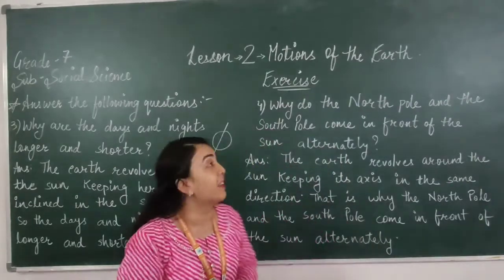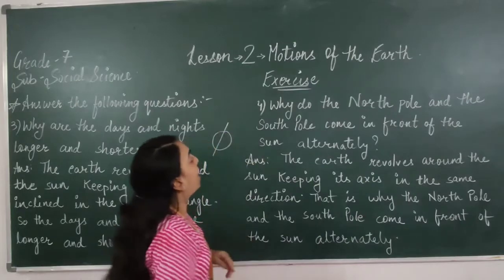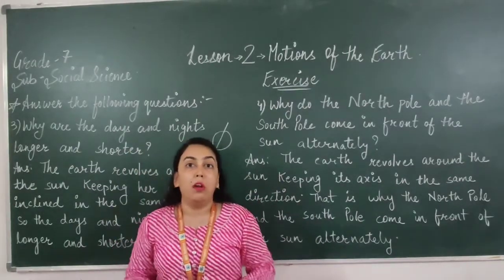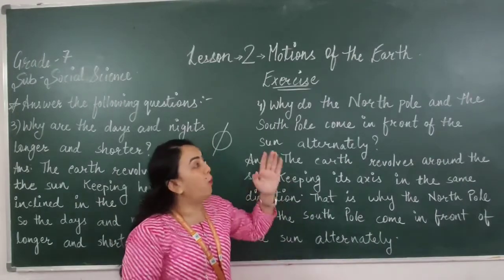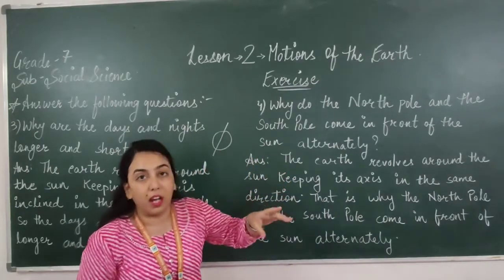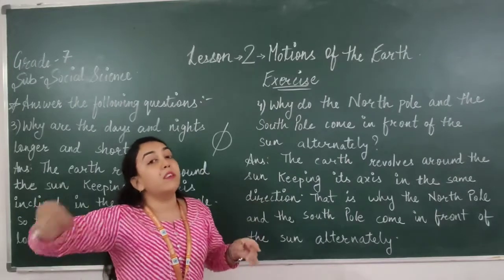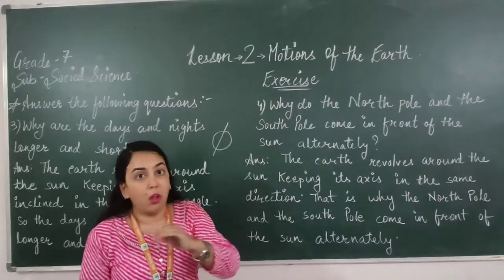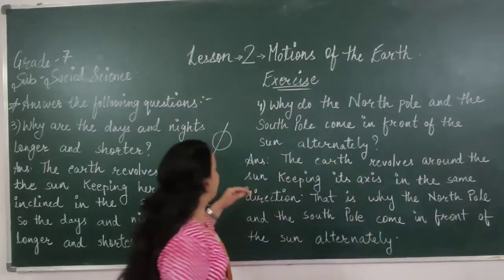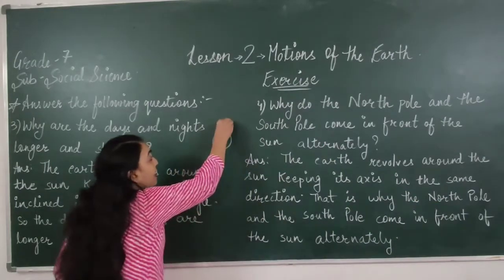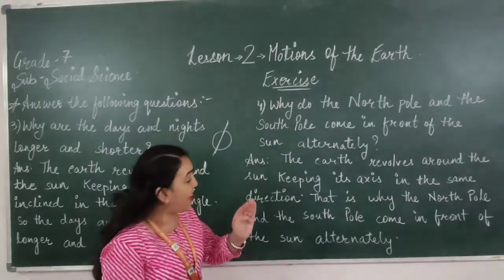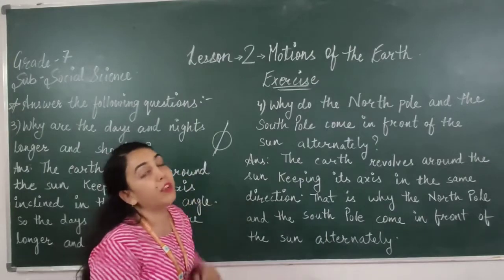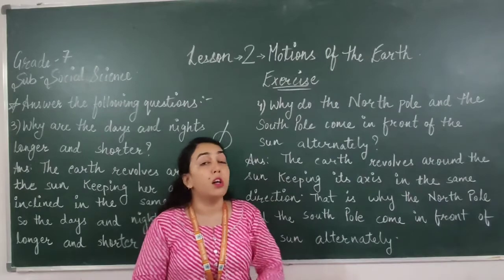So here is the answer to question 3. Next, moving to number 4: Why do the North Pole and the South Pole come in front of the sun alternately? As I explained in the video with a diagram, one pole of the earth is facing the sun and the other pole is not. When the earth completes its half revolution, the other pole faces the sun. This is because the earth revolves around the sun keeping its axis in the same direction, which does not change.